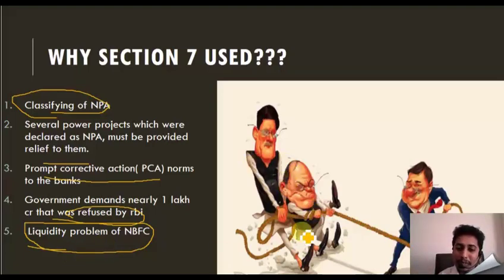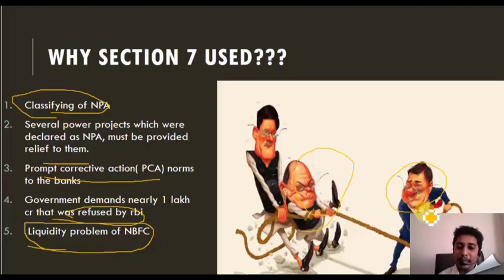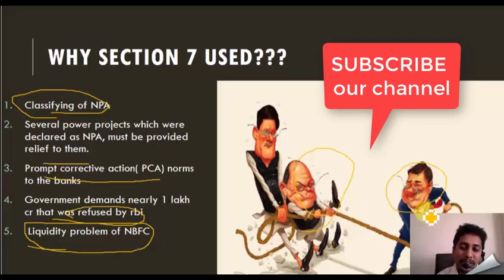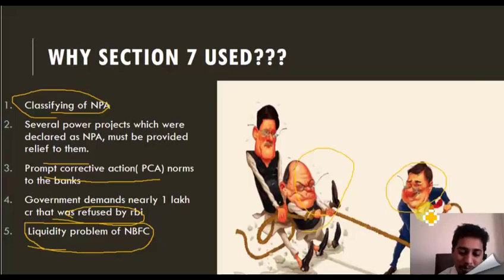Here you can see a cartoon: on one side, Arun Jaitley with a rope, and on the other side, Urjit Patel with a rope — illustrating the controversy between the central government and the Reserve Bank of India over Section 7. In history, Section 7 was never imposed, so it can be a question in every competitive examination in the upcoming times. For more such videos, please keep watching us and do subscribe to our channel to share our videos and spread the knowledge. Thank you so much.